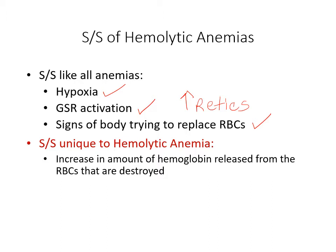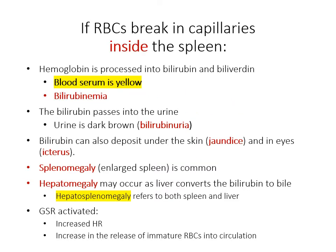Some of the signs and symptoms unique to hemolytic anemias are the increase in the amount of hemoglobin released from red blood cells that are being destroyed or lysed. Red blood cells in hemolytic anemias can be lysed in the capillaries inside the spleen or outside the spleen. When broken inside the spleen, the hemoglobin is processed into bilirubin and biliverdin, just like normal.